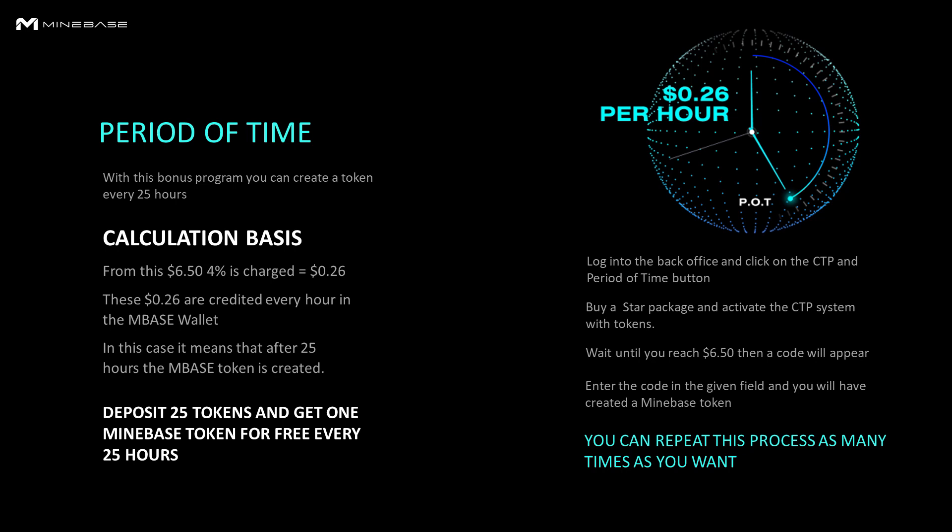Deposit 25 tokens in the CTP system, or with the star package you are also qualified for Period of Time. Wait until you reach $6.50 — after that a code will appear. Enter the code in the given field and you have already created a Minebase token. You can repeat this process as many times as you want.